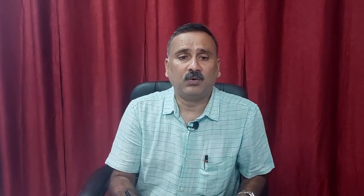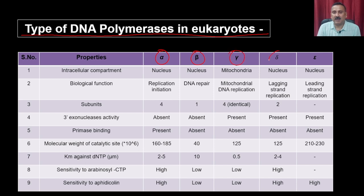Before getting into the details of eukaryotic DNA replication processes, let us first understand the machinery. There are five different types of DNA polymerases: alpha, beta, gamma, delta, and epsilon. In terms of localization, most DNA polymerases are present in the nucleus, except DNA Pol gamma, which is present in the mitochondria.